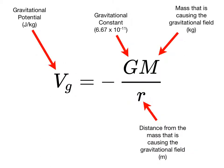This equation allows us to predict the gravitational potential V sub G at a location that's a distance R from the mass big M, which is causing the field. Remember that we just said that gravitational potential will be negative. The negative sign in this equation takes care of that.